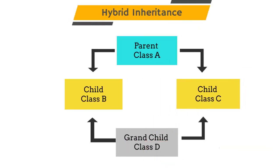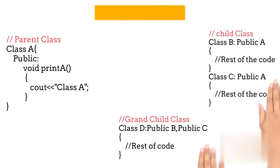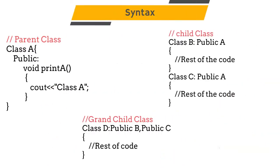The next type is hybrid inheritance. It is a combination of one or more types of inheritance. You can clearly see that this type of inheritance is a combination of multilevel and hierarchical inheritance. You can see the syntax on the screen. In this example, class A has two children, so it's a type of hierarchical inheritance. And class D has two parents which are B and C. So class D can access the property of all the parent classes, which are A, B, and C.